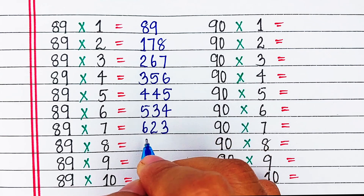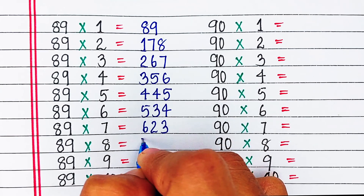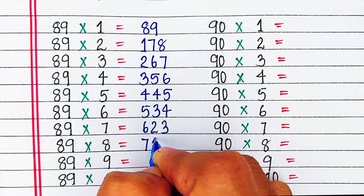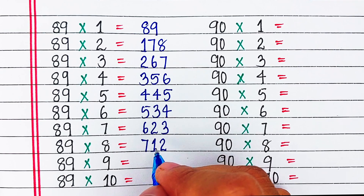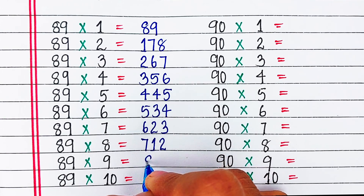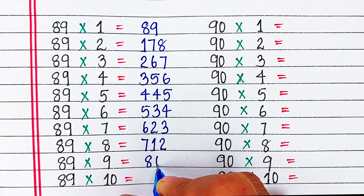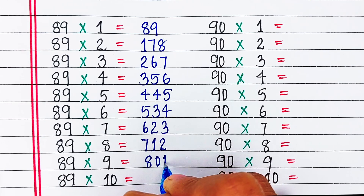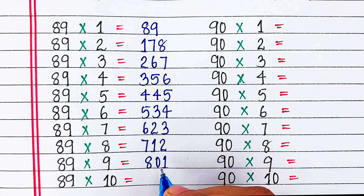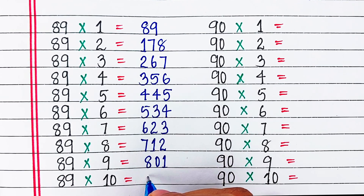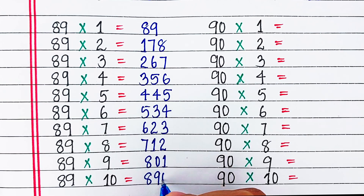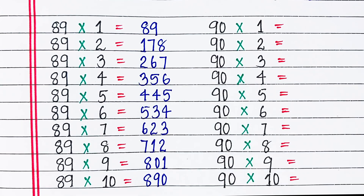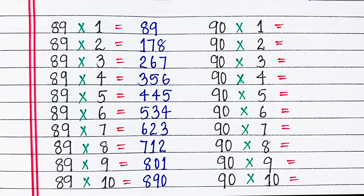89 6s are 534, 89 7s are 623, 89 8s are 712, 89 9s are 801, 89 10s are 890.